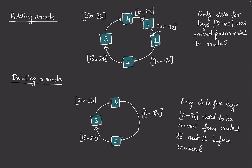Now let's see what happens if we add or remove a server. If we add server five and assign it the range from 0 to 45, only the data corresponding to keys 0 to 45 — which were earlier handled by node one — has to be moved from node one to node five. Earlier this range was assigned to node one because it was the first node in the clockwise direction; now the first node is node five. So only these keys need to move, unlike the traditional approach where all keys had to be moved. In practice, with many servers, this range is very small.